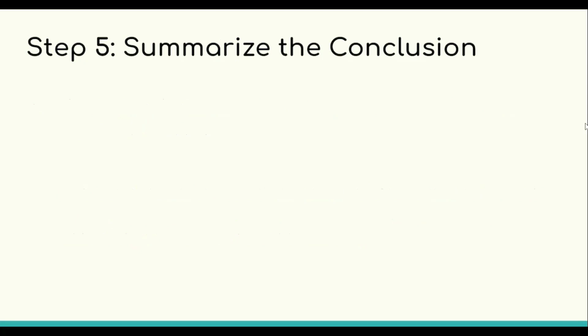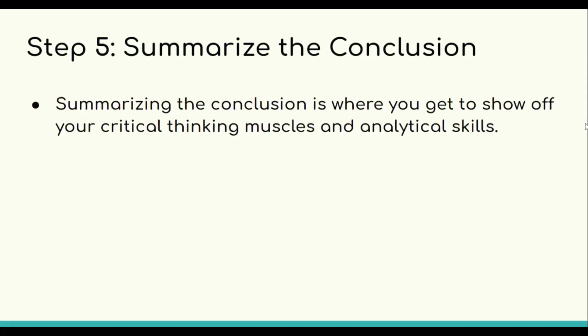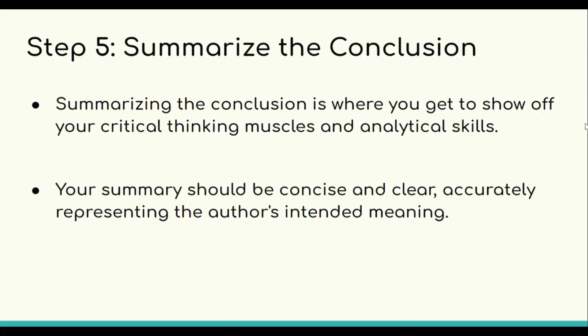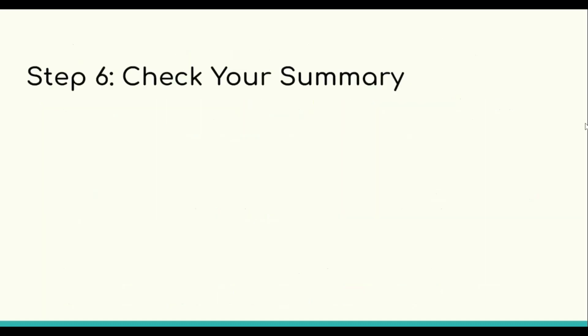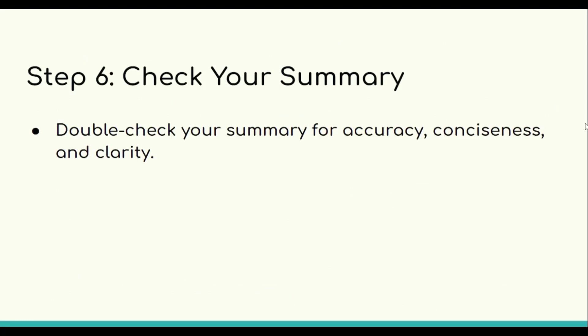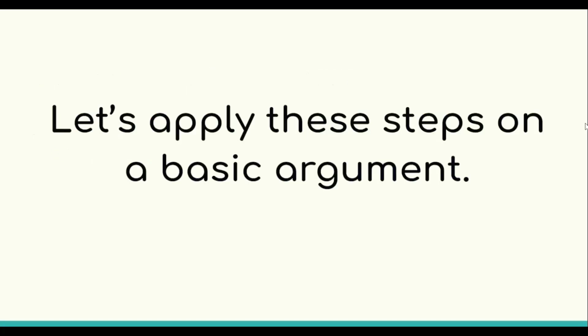Step five is to summarize the main conclusion — this is where you flex your critical thinking muscles. Your summary should be concise and clear, accurately representing the author's intended meaning. Rephrase the conclusion in your own words but be careful not to distort the original meaning. Step six is to check your summary: double check that it is accurate, concise, and clear, effectively conveying the author's intended meaning without undermining the message of the argument.